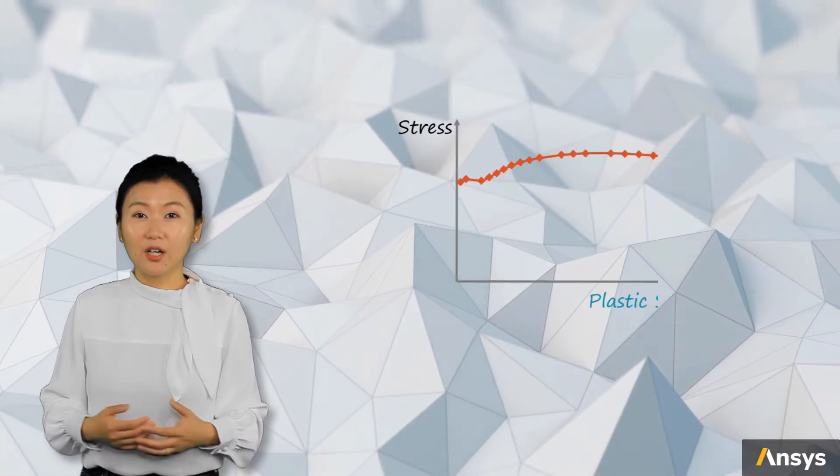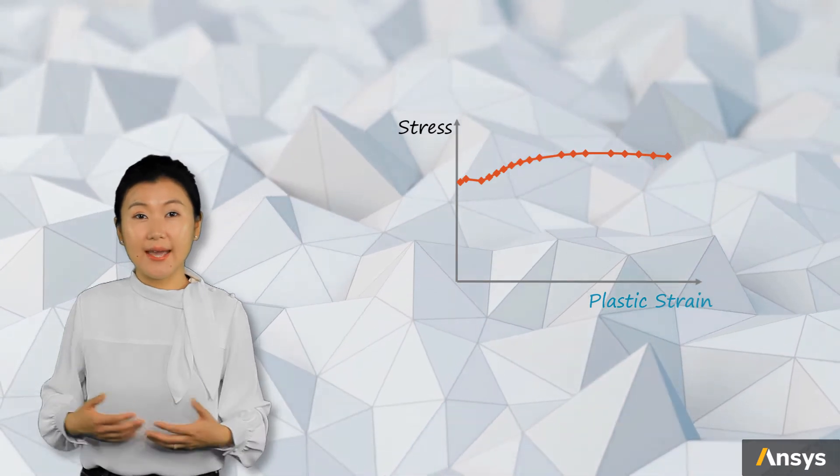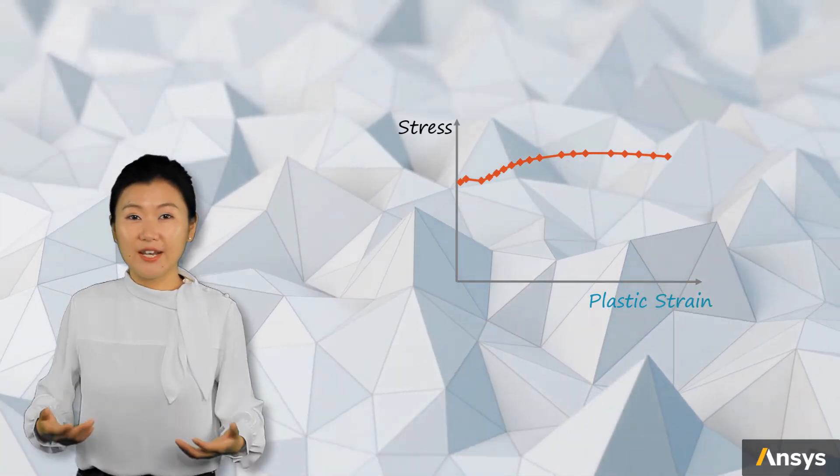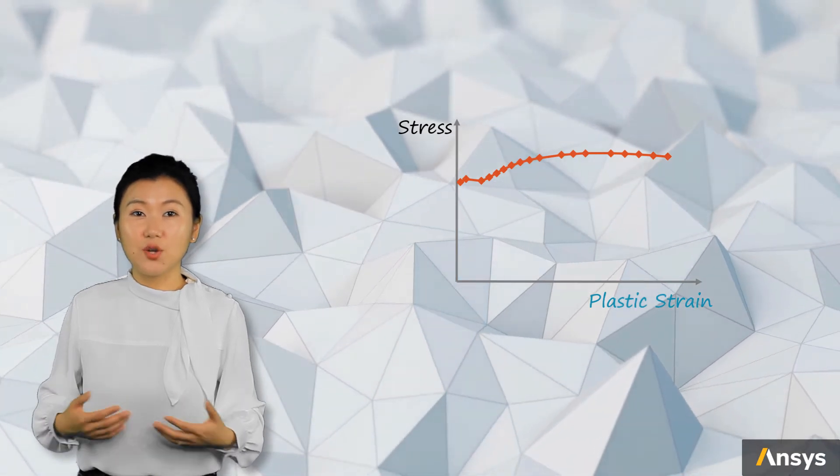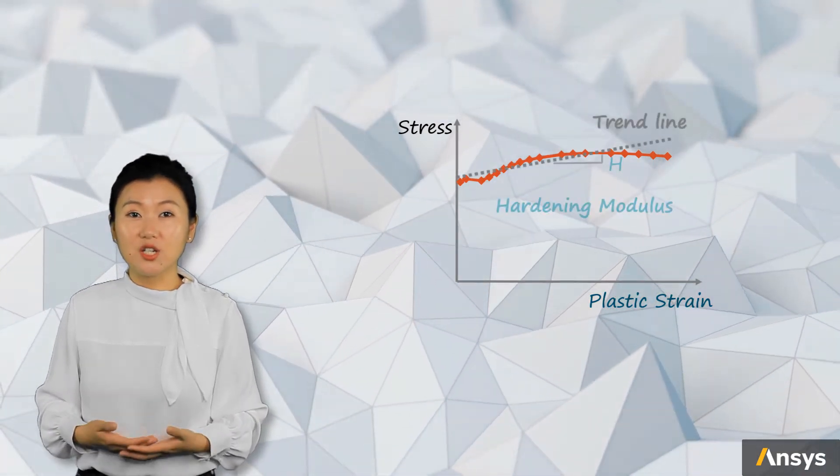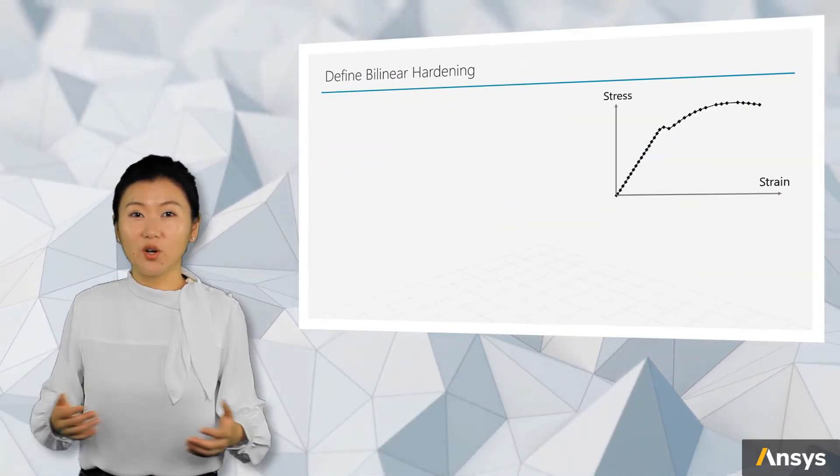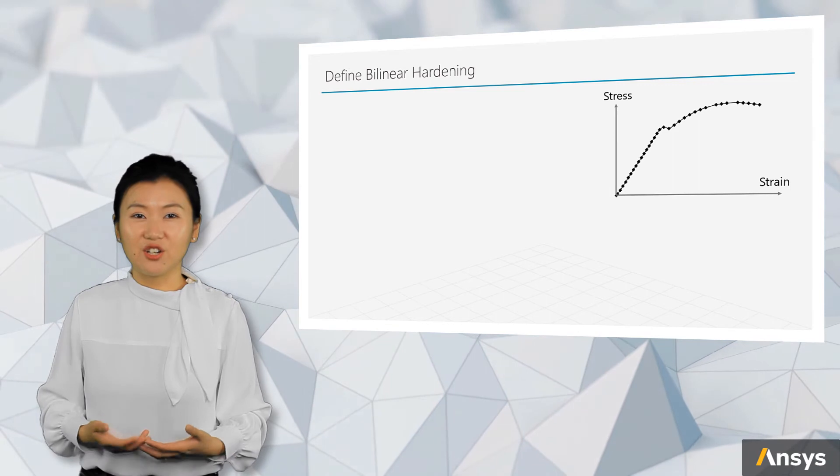Now, plot the curve with plastic strain as horizontal axis and strength as vertical axis. One way to find an average tangent of the curve is to find the trend line of it, and use the tangent of the trend line as the hardening modulus H. Let's practice these steps for a given material data to define bilinear hardening.